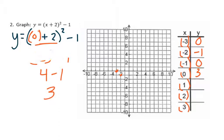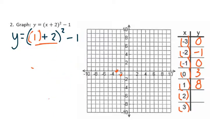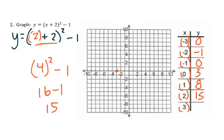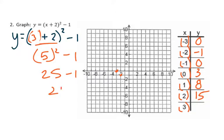Next, plugging in a 1 — you might think it gives the same result as negative 1, but it does not. So be careful assuming a pattern before you've graphed one of these. We get 1 plus 2, which is 3. 3 squared is 9, and 9 minus 1 gives us 8. Then plugging in 2: 2 plus 2 is 4. 4 squared is 16. 16 minus 1 leaves us with 15. And plugging in 3: 3 plus 2 is 5. 5 squared is 25. Minus 1 gets you 24.